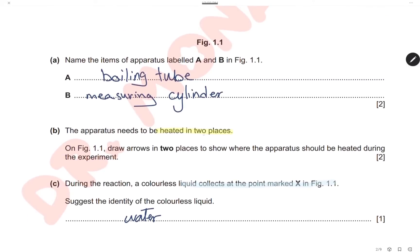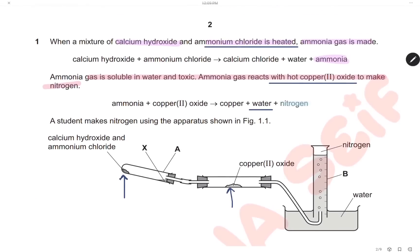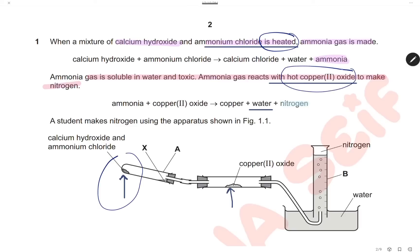Second, the apparatus needs to be heated in two places. Draw arrows in two places to show where the apparatus should be heated during the experiment. It is already mentioned that we will heat the mixture of calcium hydroxide and ammonium chloride, so we draw an arrow there — this is the first arrow. Second, ammonia gas is reacted with hot copper(II) oxide, so we have to heat the copper(II) oxide. We draw another arrow there. Here are the two arrows where the apparatus should be heated.